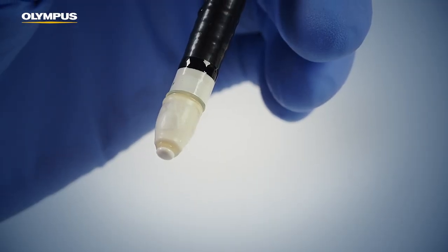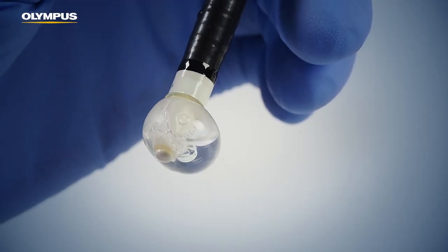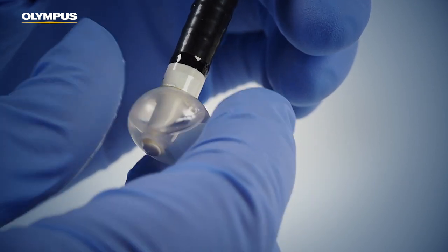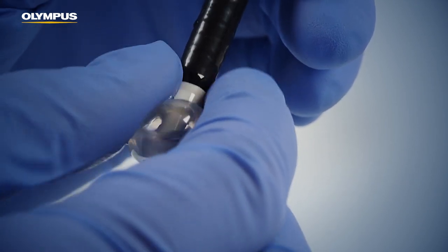Keep the balloon slightly inflated and point the endoscope tip downward. This will bring the air bubble to the top back of the transducer.